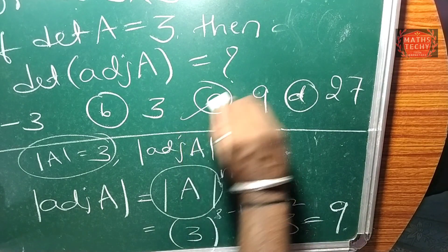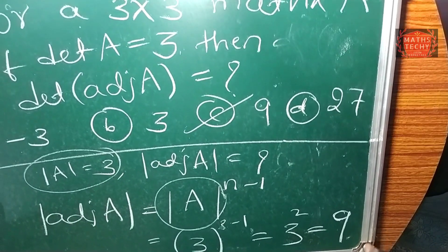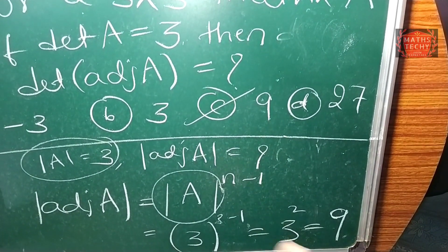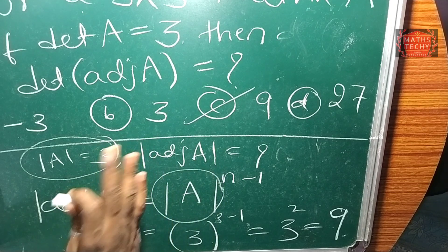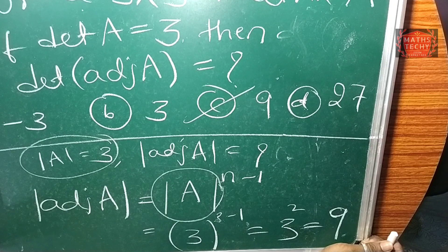So the answer is 9, option C. This is the shortcut trick. I have shown multiple shortcut tricks in this chapter, so keep learning these methods.